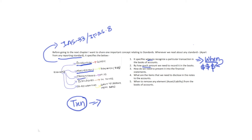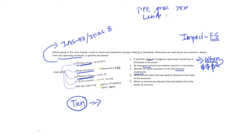The third point is presentation — how to present the impact of the transaction in the financial statement. For example, PP&E is shown as PP&E gross, less accumulated depreciation and impairment, giving us the net PP&E. This is one type of presentation suggested by IAS 16 or IAS 1 — these are the presentation requirements.